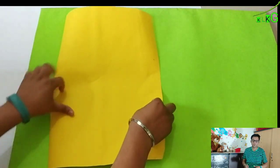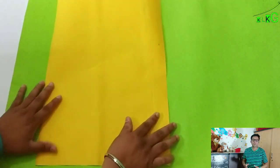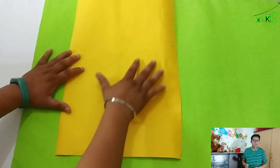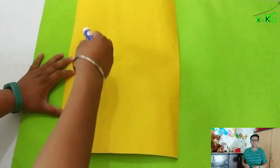Friends, first of all, we have to take a Thermocool sheet and paste a paper on it. As you can see, I am going to paste this yellow paper on it. And as the yellow paper has been pasted,